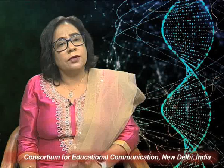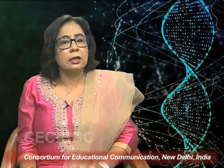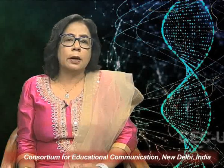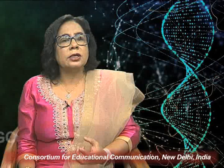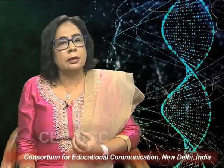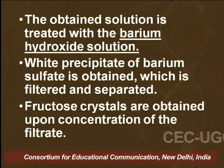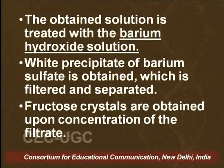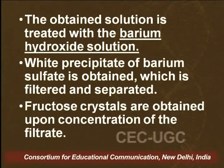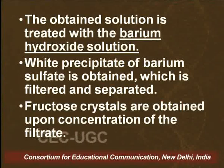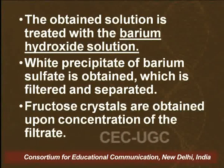How do we separate fructose from the mother liquor? We take the solution and treat it with barium hydroxide solution. A white precipitate of barium sulphate is obtained, which is filtered and separated. In the filtrate, when we concentrate it, we get the crystals of fructose.